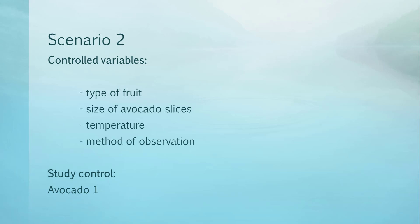The controlled variables are the type of fruit, the size of avocado slices, the temperature and the method of observation.